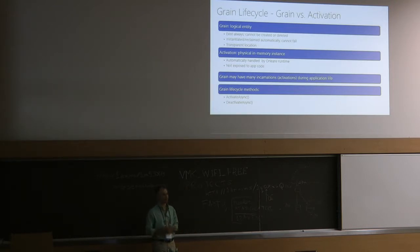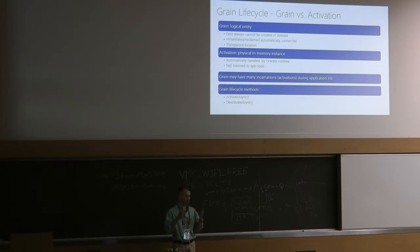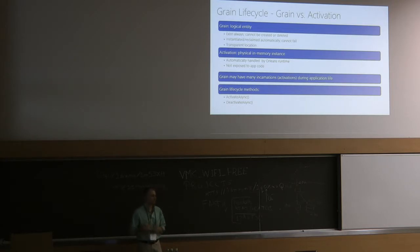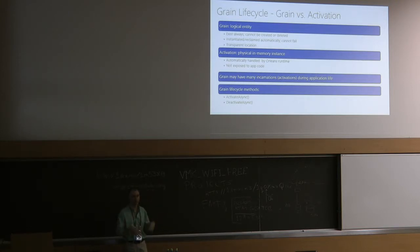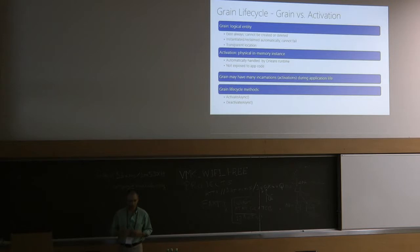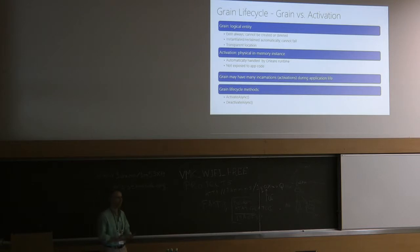People ask whether OnDeactivateAsync is the right place to save state. The answer is no — because we build for the cloud and for failures. The machine may die and OnDeactivateAsync may never get called. You cannot rely on clean deactivation. OnDeactivateAsync is used for bookkeeping like notifying others you're going offline. OnActivateAsync, on the other hand, is guaranteed to be called when activating, so you can reliably load state there. It's asymmetric by design.